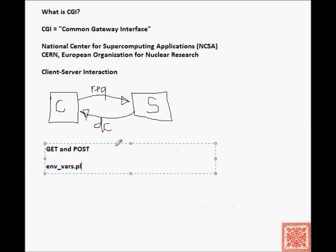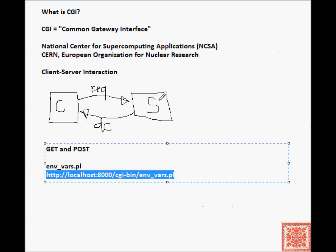So suppose that we know that the URL for our script is at http://localhost:8000/cgi-bin/env_vars.pl. So let's say when the client wants to execute env_vars.pl, this is the URL that the client has to send to the server in order for the server to run this CGI script. So if we just open a browser and enter this URL as is without anything, then the server will run env-vars.pl without any input.